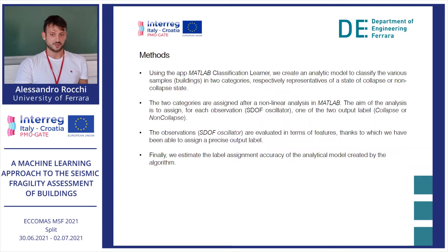In this slide, you can see the steps we use for this approach. Using the MATLAB Classification Learner app, we create an analytical model to classify the various samples into two categories, respectively representatives of a state of collapse or non-collapse of the structure. We assign the categories beforehand by running a nonlinear analysis in MATLAB. The aim of the analysis is to assign each observation, which refers to a dot oscillator representing a type of building, one of the two output labels — a state of collapse or non-collapse.